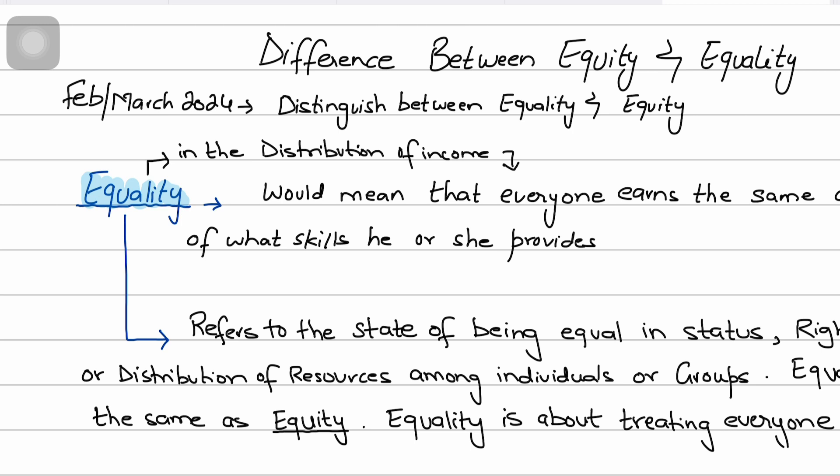For example, a government policy of equality in healthcare might involve providing the same level of medical coverage and services to all citizens, regardless of income or health status. Policies designed to promote equality focus on ensuring uniform treatment and access to resources or opportunities for all individuals — such as universal healthcare or equal pay legislation.